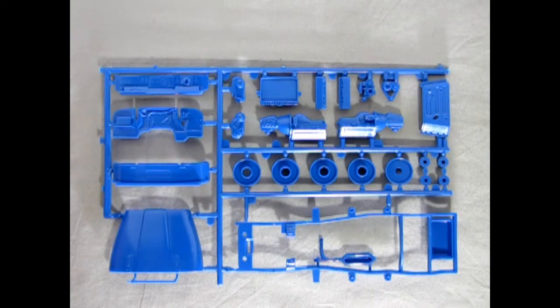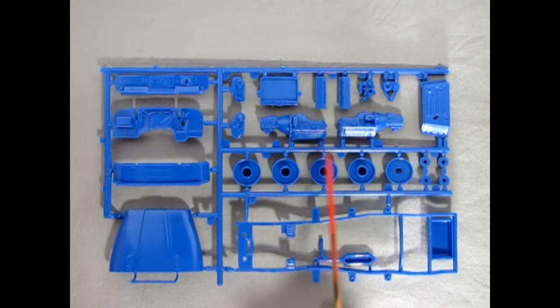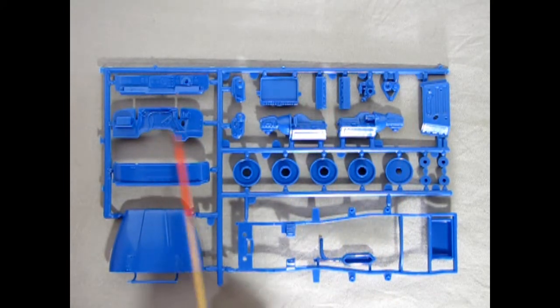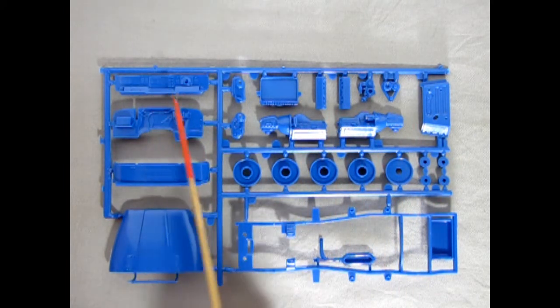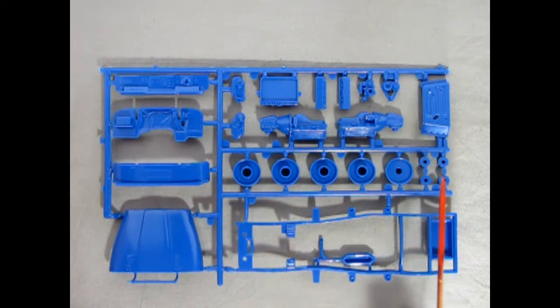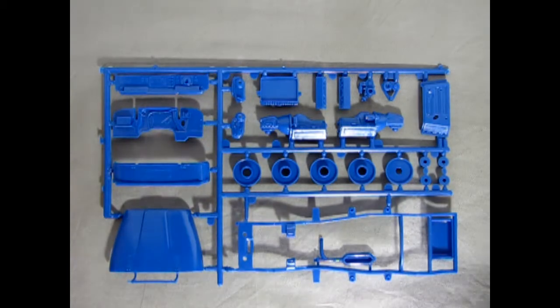Our Jeep model kit consists of five great big part trees and the detail on here is pretty nice. It's also quite easy and crisp. As you can see we got our dashboard, firewall, cowl, hood, engine components, and our frame and chassis as well as the wheels.